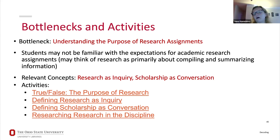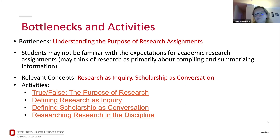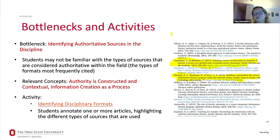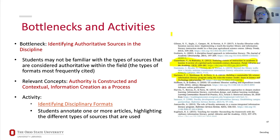Here are a few bottlenecks with associated activities. If the bottleneck is understanding the purpose of a research assignment, activities where students think about and define what research is. For evaluating sources, activities around identifying authoritative sources in the field — such as analyzing a reference list to see what types of sources appear. The TILT model (transparency in learning and teaching) is also great, focusing on being very clear about purpose, task, and criteria when sharing assignments with students.